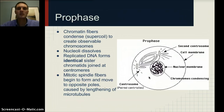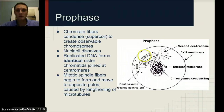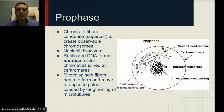We'll get to work with these in hands-on activities in class to better understand the vocabulary. Spindle fibers begin to form and move to opposite poles, caused by the lengthening of microtubules. There are two centrosomes, each with paired centrioles, and they begin to move to opposite ends of the cell. These microtubules are what will help pull those chromosomes apart in later stages.